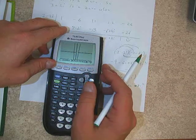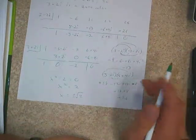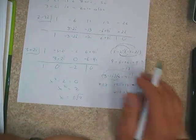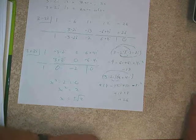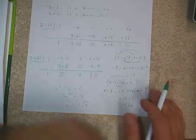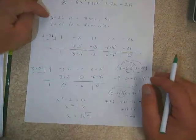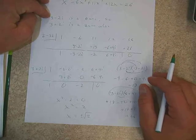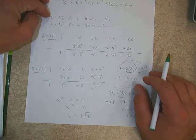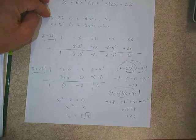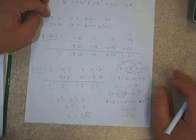The other two zeros are going to come from the remaining quadratic, which is x squared minus 2. We set that equal to zero and take the square root. We get plus and minus the square root of 2. And if you look at the graph again, it looks like it crosses somewhere between 1 and 2 on both sides — that's 1.41, which is the square root of 2.